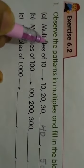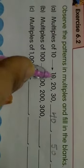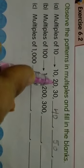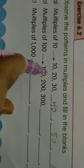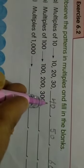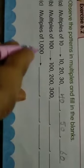Question 3: Observe the pattern in multiples and fill in the blanks. Multiples of 10: the first multiple is 10, second is 20, third is 30, fourth is 40, fifth is 50, sixth is 60. The rest of the questions follow the same pattern.